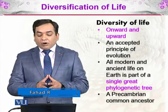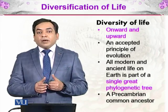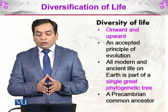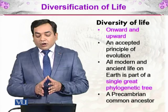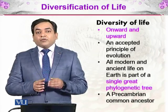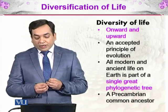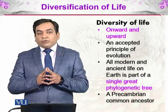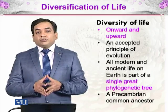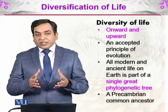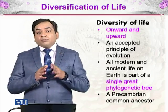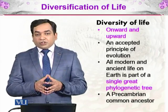An accepted principle of evolution tells us that evolution happened as a result of natural selection, and that all modern and ancient life on Earth is part of a single great phylogenetic tree. This means there was a single Precambrian common ancestor — one tree, one common ancestor. All scientists agree there was a single origin of life, and from then the diversity of species has increased.